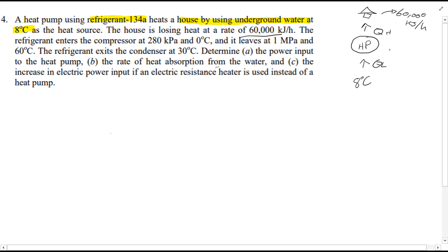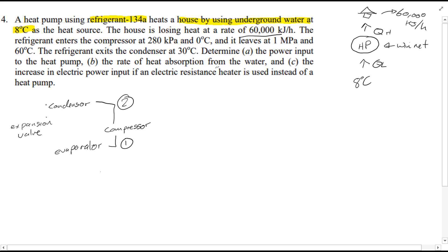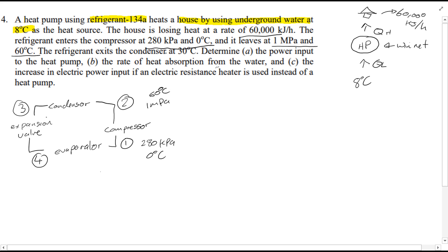The heat pump is powered by W_in net, and the fluid is in a cycle. The fluid first enters the compressor, then the condenser, before passing through an expansion valve for throttling at point 3, and finally into the evaporator before repeating the cycle. At point 1, entry to the compressor, we have 280 kPa and 0 degrees C. It leaves the compressor at point 2 at 1 megapascal and 60 degrees C, and exits the condenser at point 3 at 30 degrees C.